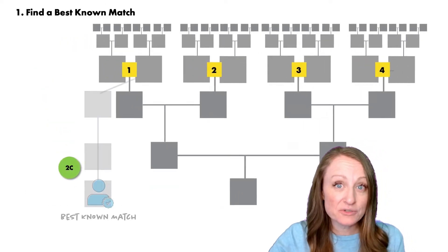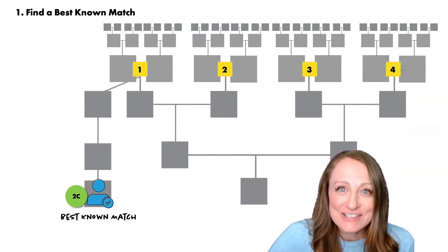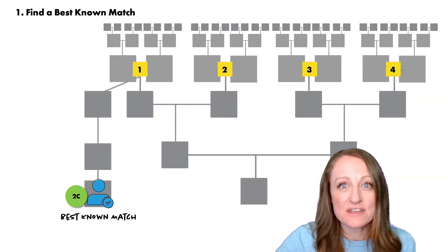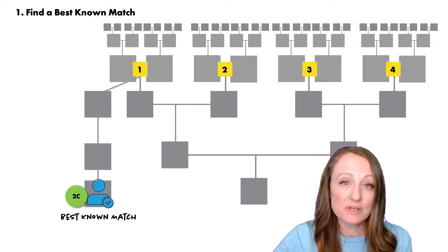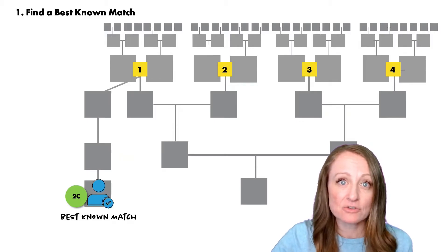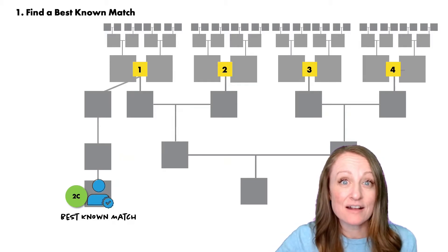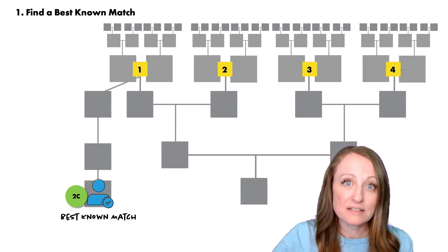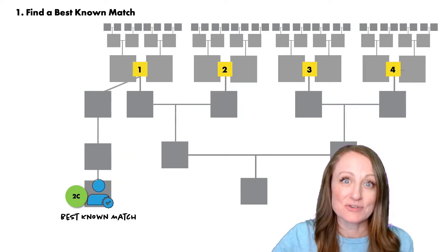In order to do that, you need a best-known match — someone who's a descendant of one of these ancestral couples. So if I wanted to find out about this first match group, I would need to find a second cousin who's a descendant of that direct male line ancestral couple.